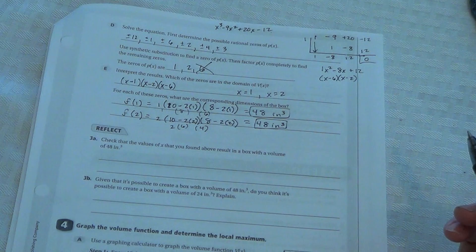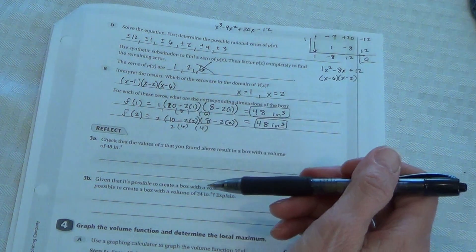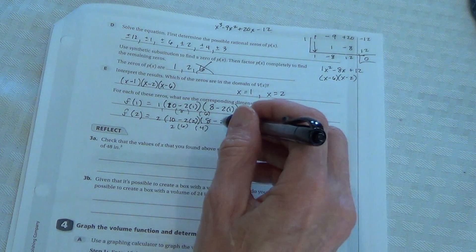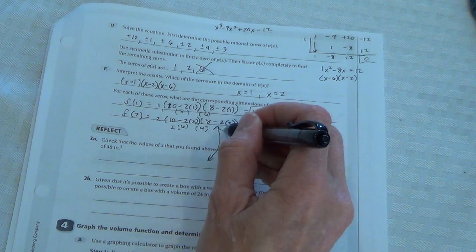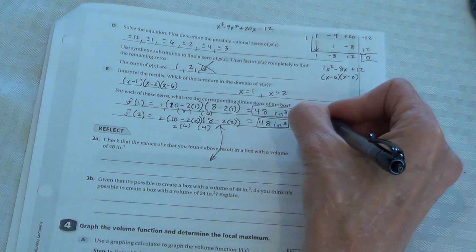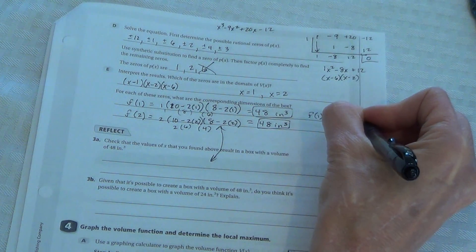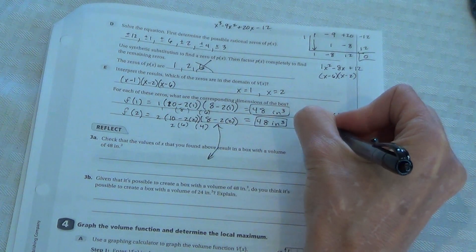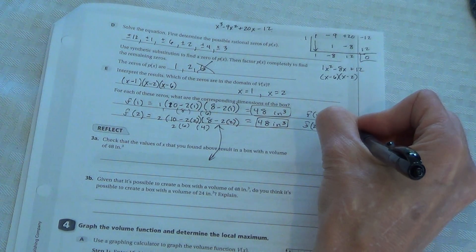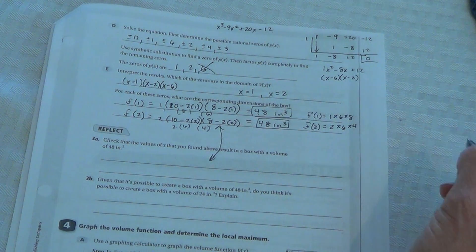Check that the values of x that you found above result in a box with a volume of 48 inches. We just did that. Oh, we didn't look at the dimensions of the box. We didn't really answer that one. So you could put this answer down here. And for up here, we could write these dimensions. When it's 1, the box would be 1 by 6 by 8. When it's 2, the dimensions we said were 2 by 6 by 4. I think that's what I said. 6 and 4. Yeah.